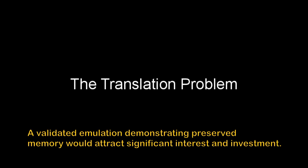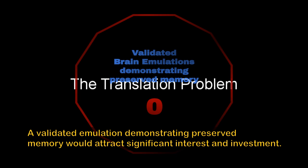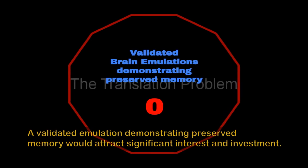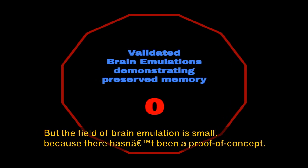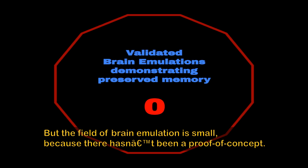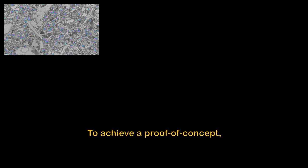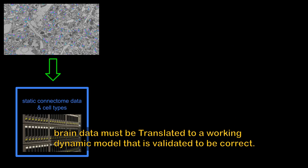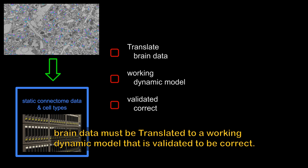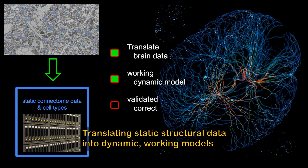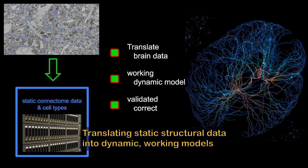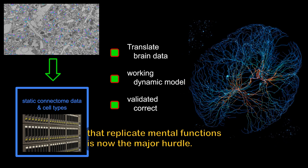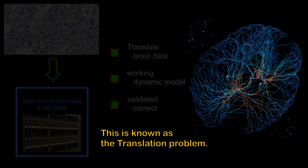The translation problem. A validated emulation demonstrating preserved memory would attract significant interest and investment, but the field of brain emulation is small because there hasn't been a proof of concept. To achieve a proof of concept, brain data must be translated to a working dynamic model that is validated to be correct. Translating static structural data into dynamic working models that replicate mental functions is now the major hurdle. This is known as the translation problem.